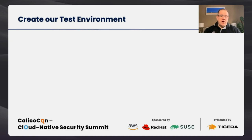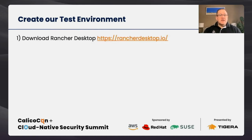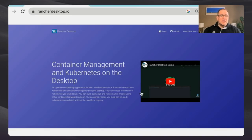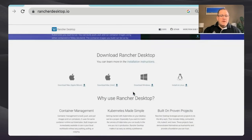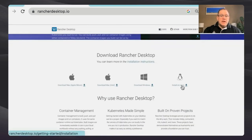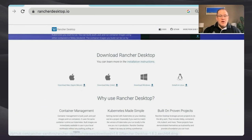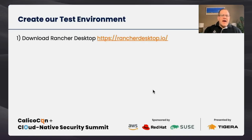We're going to create our test environment. We'll go to Rancher Desktop — rancherdesktop.io. You'll see a choice between Linux, Windows, Mac Intel, or Mac Silicon. You download it, run the installer, there's nothing really difficult about it. You shouldn't encounter any problems. They also have a great Slack channel if you need help.